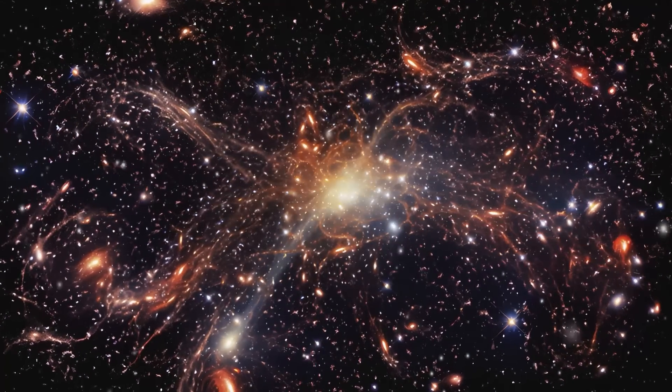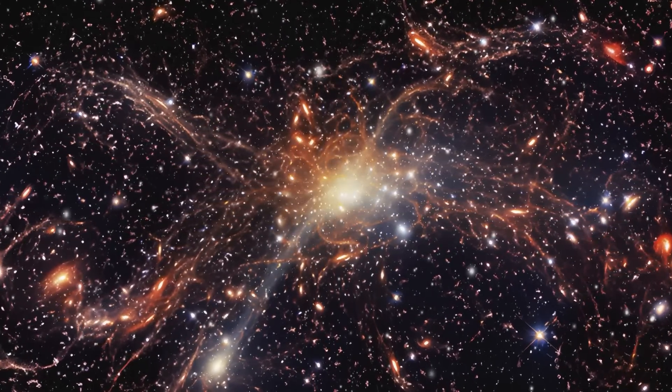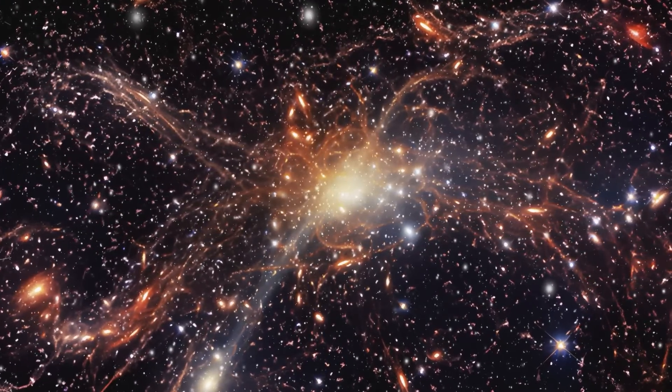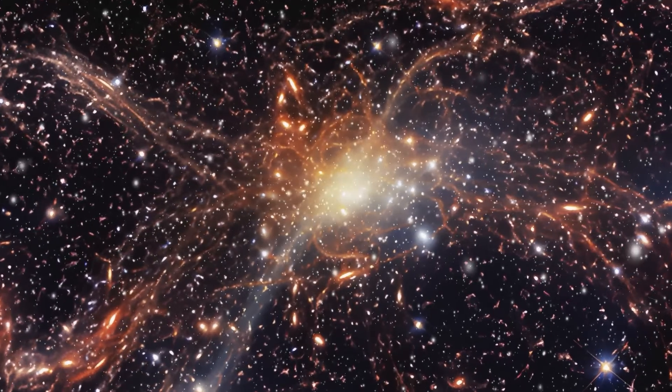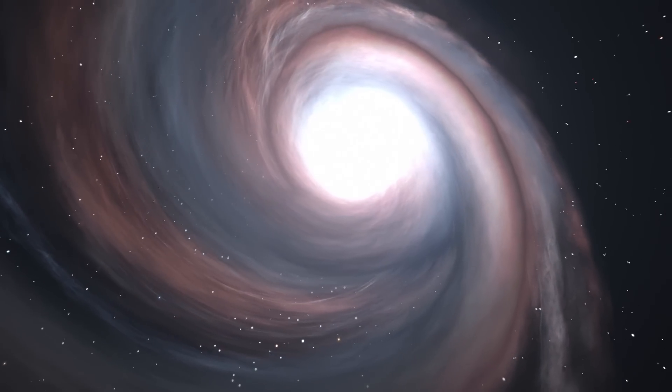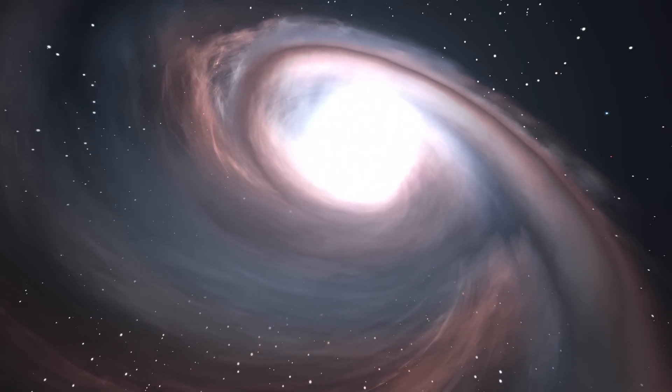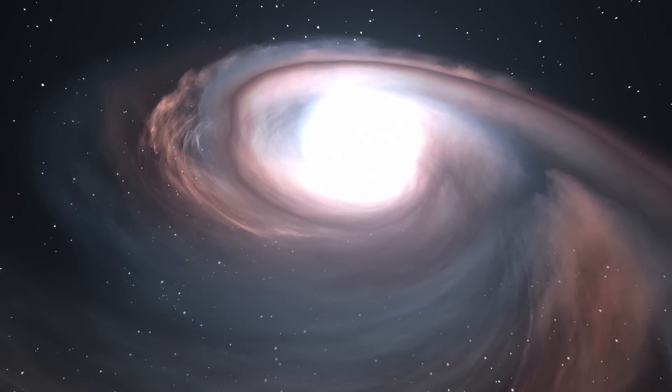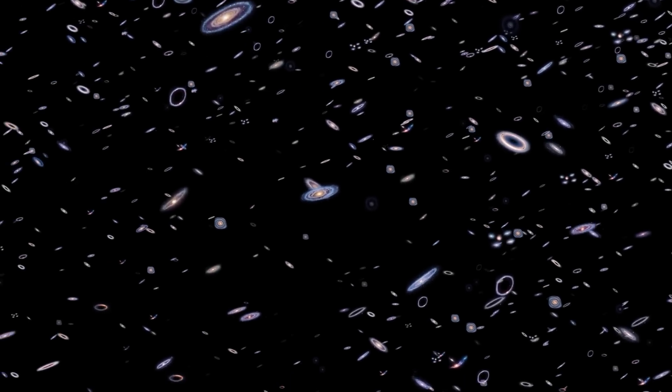Imagine a scenario where the cosmic web becomes increasingly sparse over billions of years, with galaxies drifting apart like ships lost at sea. In this far future vision, many galaxies could become isolated, with only a few remaining gravitationally bound to one another. This gradual dispersal of galaxies raises intriguing questions about the fate of the universe. Will it continue to expand indefinitely, leading to a cold and dark cosmos where stars eventually burn out? Or could there be a point where the expansion slows and reverses, leading to a cosmic collapse known as the Big Crunch?